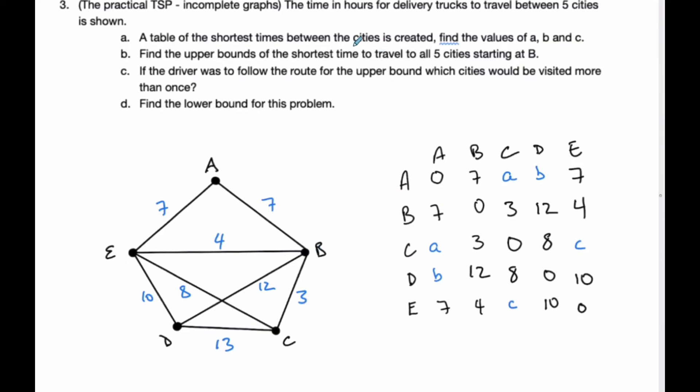It's looking for the shortest time between the cities. A to B is 7. A to C - there's no direct link from A to C, so we want to find the shortest time to get there. By inspection, if I go this path here, that's 10. If I go around here, that's going to be over 20. I can go 7 and 8, which is 15. So really, the shortest way is going to be 10. So a equals 10.